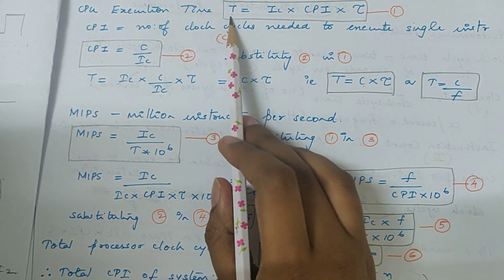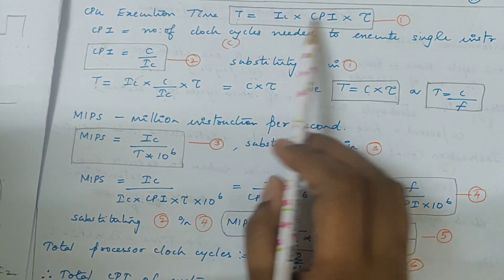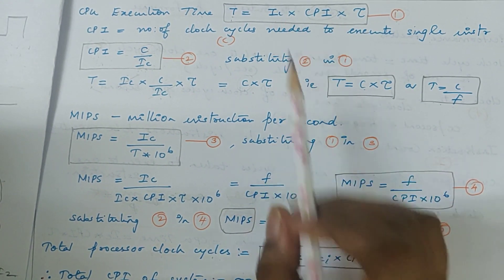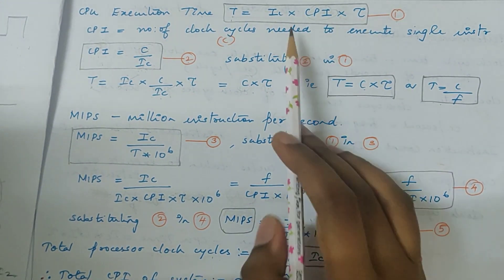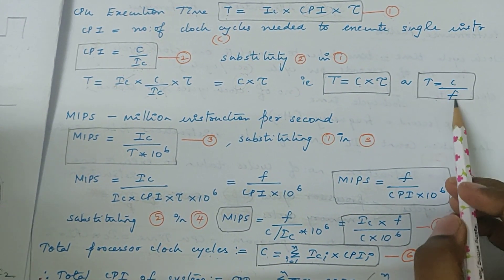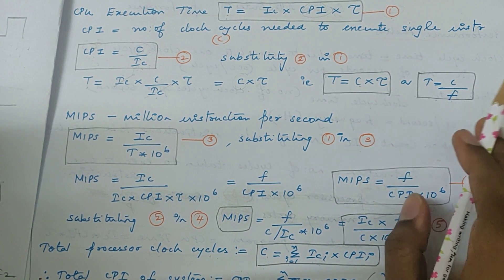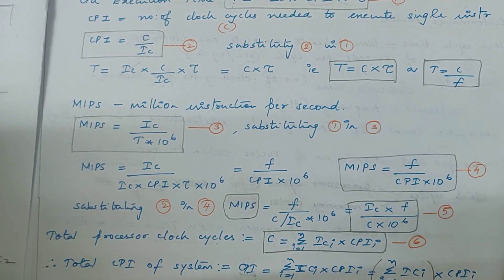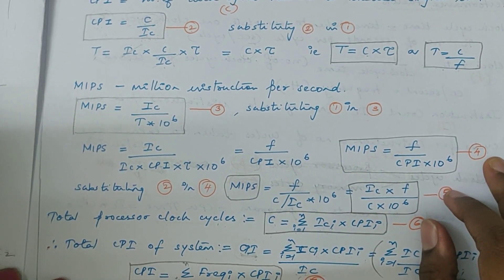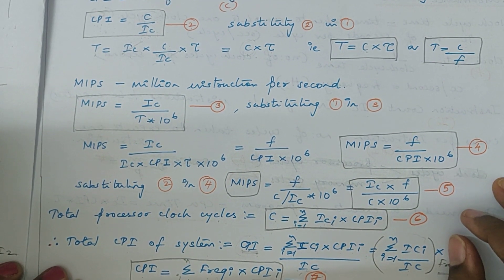The CPU execution time main formula has been consolidated with CPI substituted in, and also with clock rate substituted in. Now we have one more parameter to measure the performance of a machine.